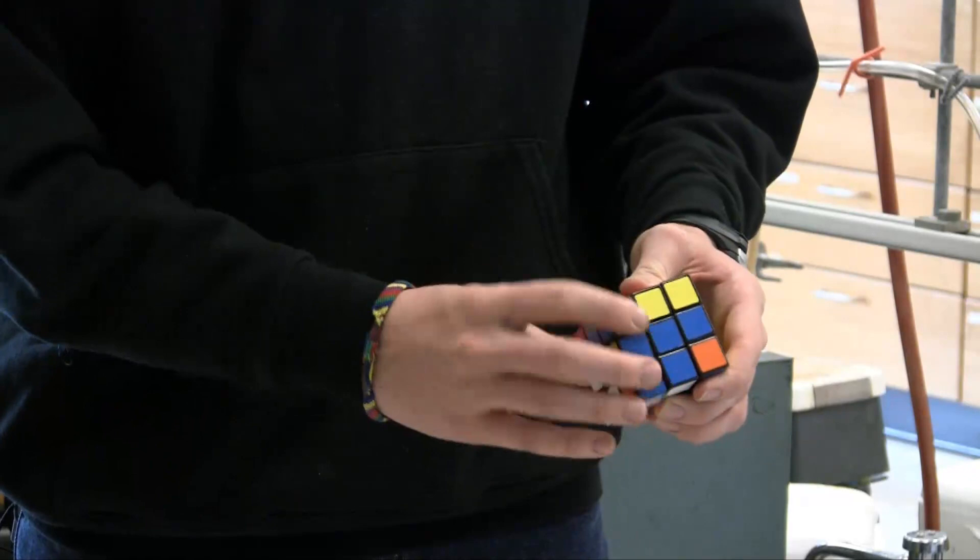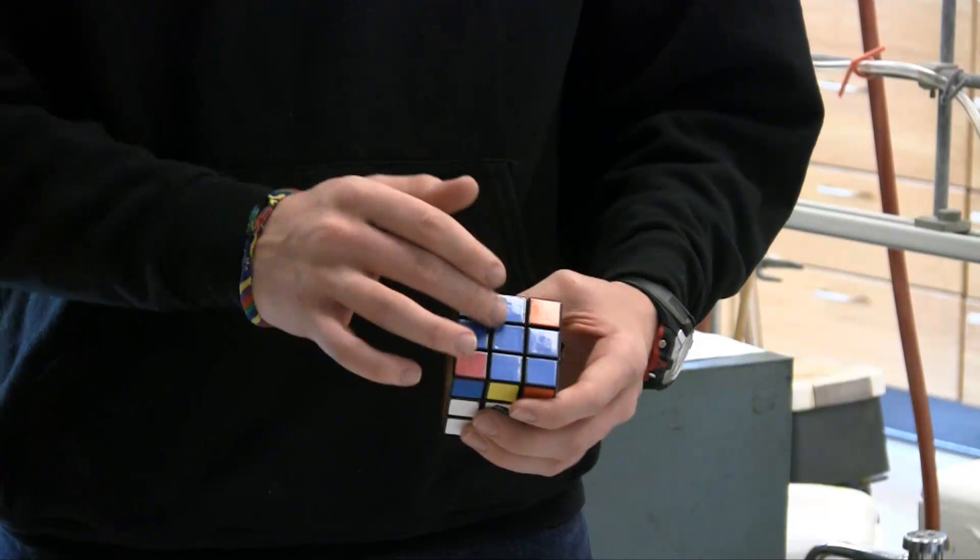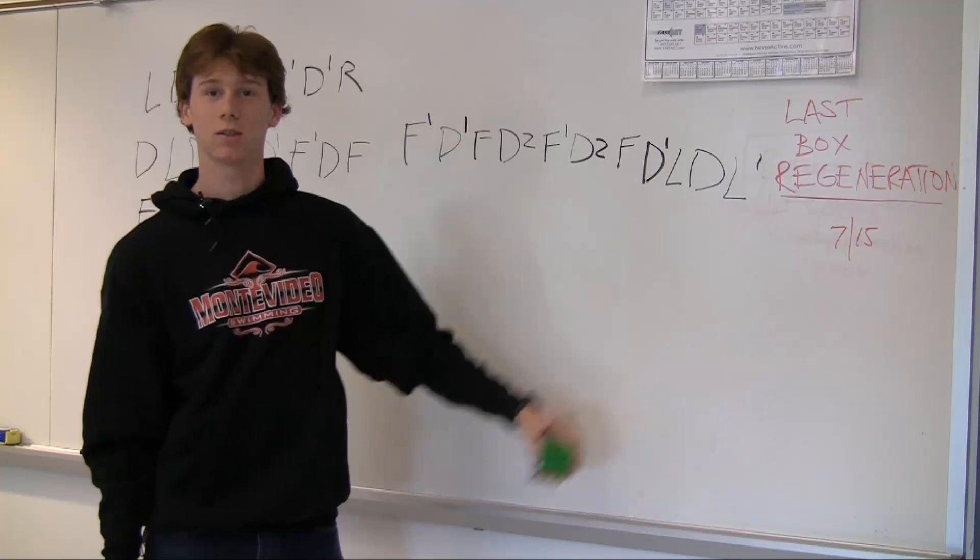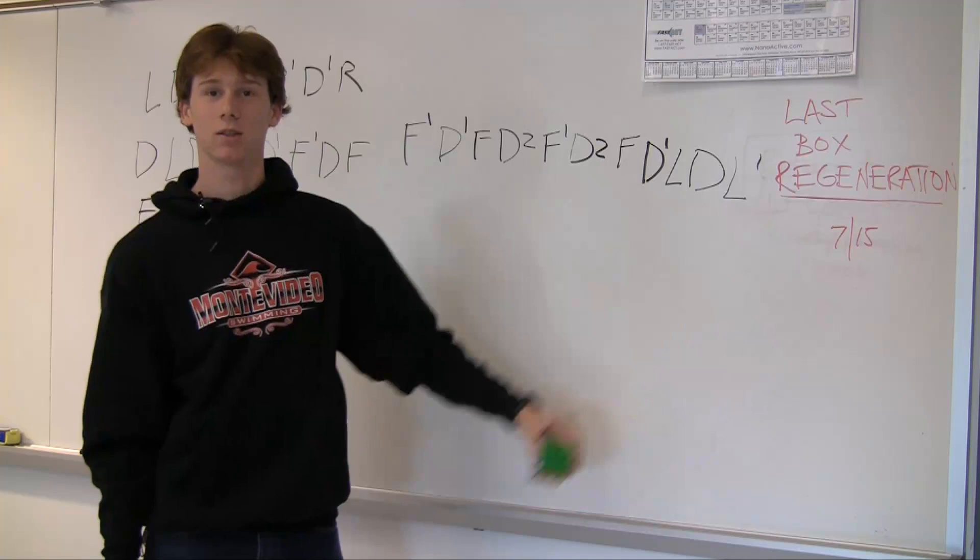Normally using the original algorithm you would need to turn the dot into the L, L into a line, line into a cross. But I found a shortcut where you can just take it straight from the L to the cross. And that's the algorithm that you use. It's quite long so it takes a while to memorize, but it's actually faster than using the two of these ones.